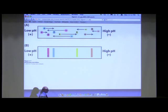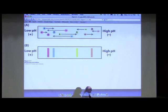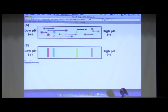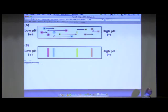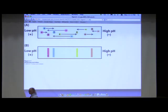Isoelectric focusing separates proteins on the basis of their pI. To do it, we take a tube — like a column — and pour into it beads with various charges. Some have 100 negative charges, another 99, 98, 97, and so on — a whole spectrum from minus 100 down to zero. Similarly, we pour beads with positive charges from zero up to plus 100.